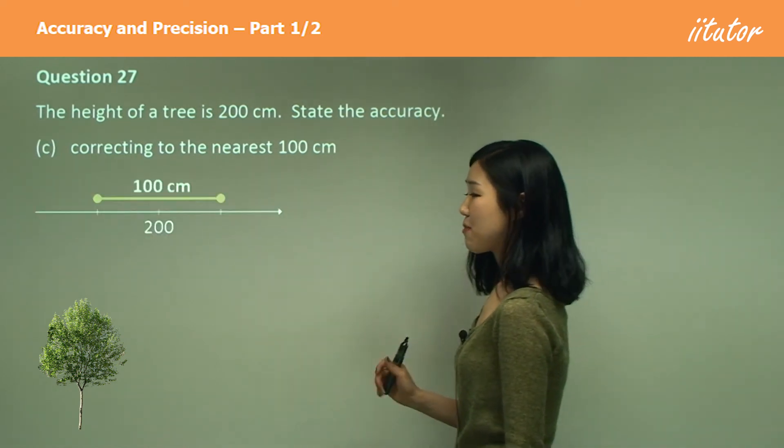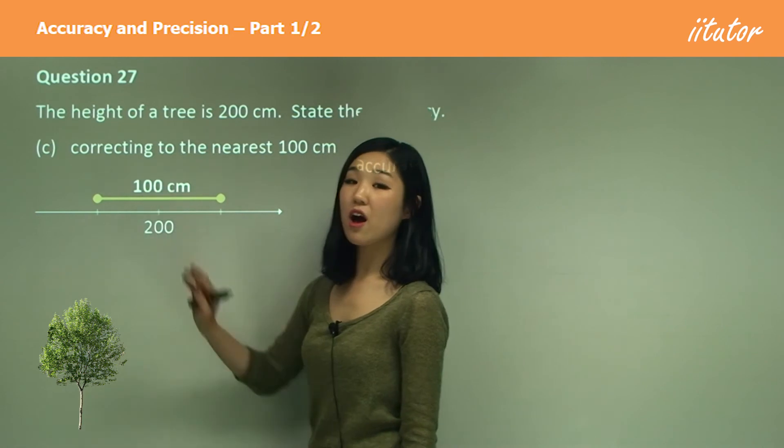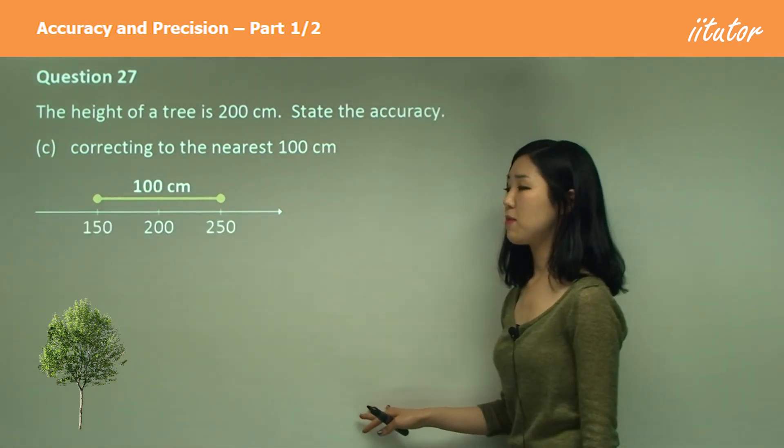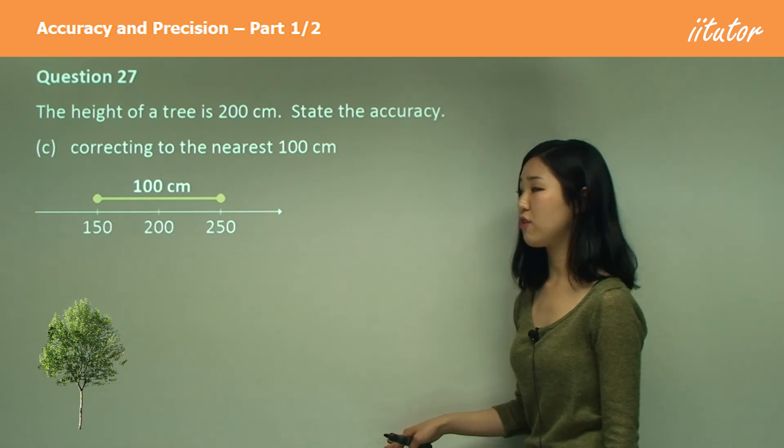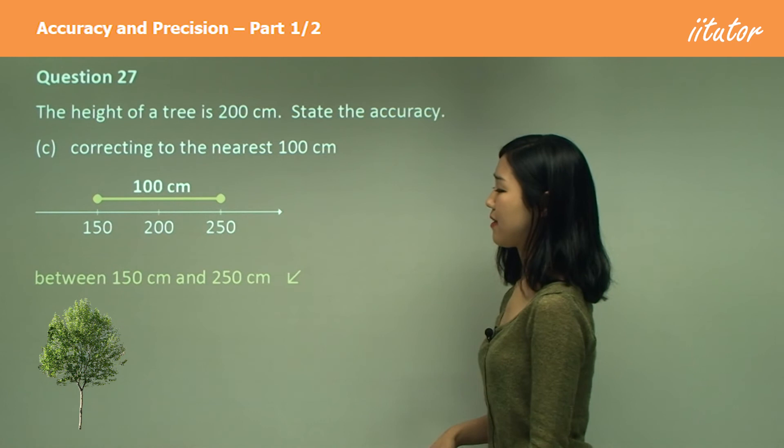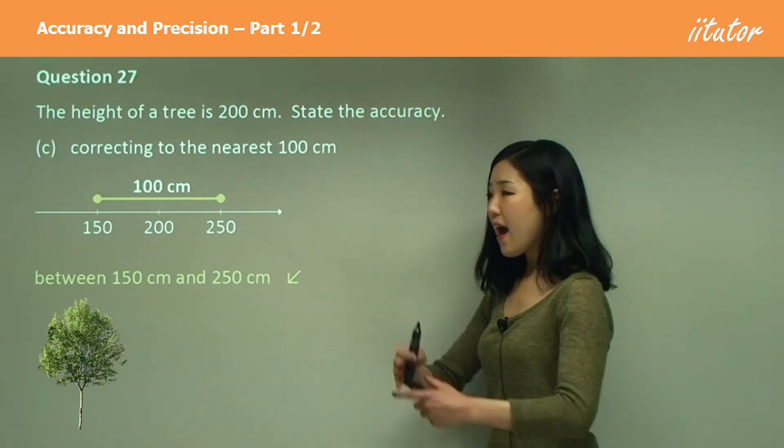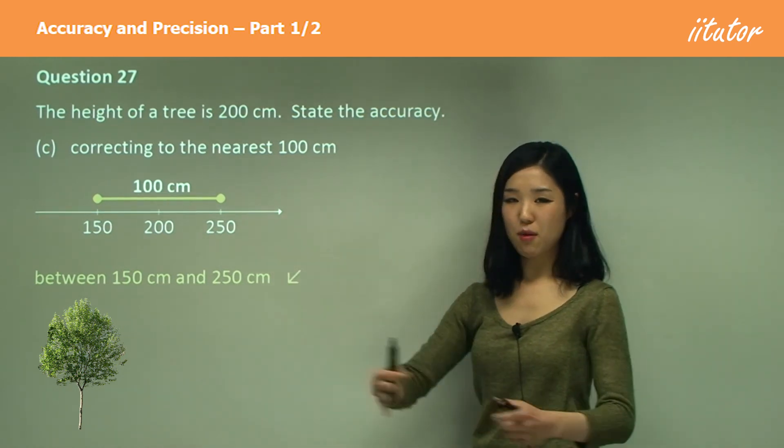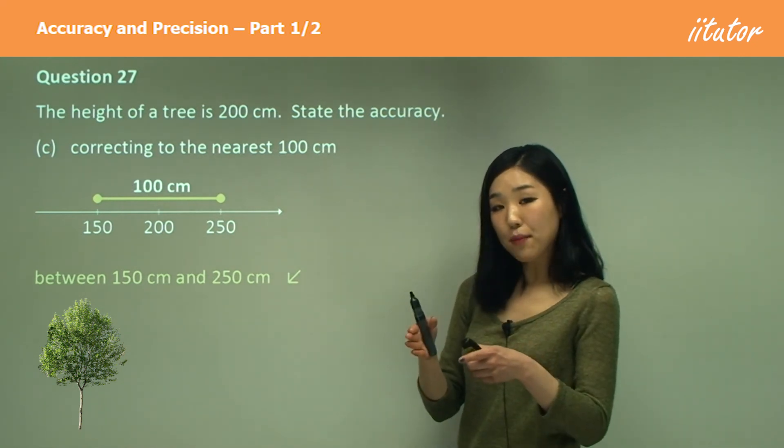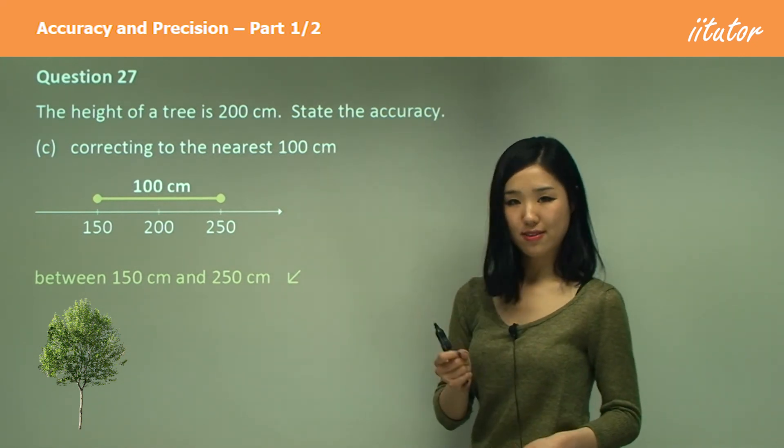And to the nearest 100, same kind of thing. I want this gap to be 100. So half of 100 is 50. So it's going to be between 150 and 250. So that's a very rough estimate, isn't it? So that's the answer. So as the limits of accuracy become bigger, the more rough estimate it becomes. The smaller gap is a very close estimate.